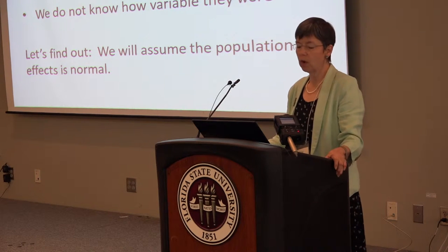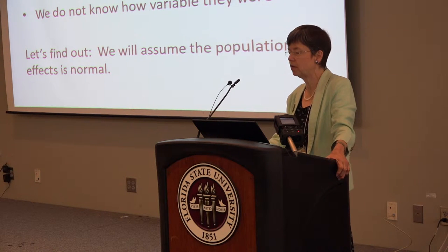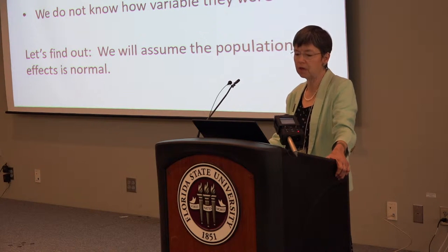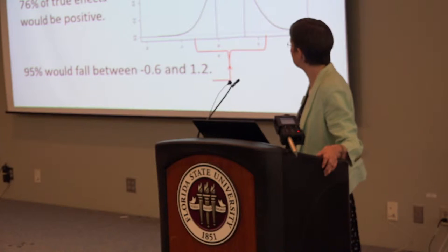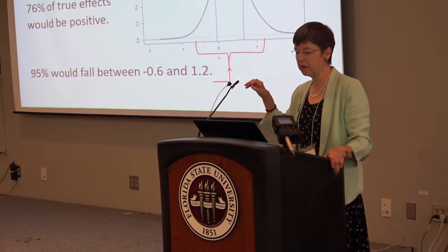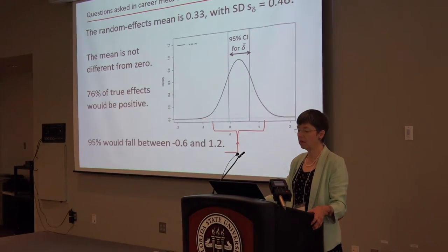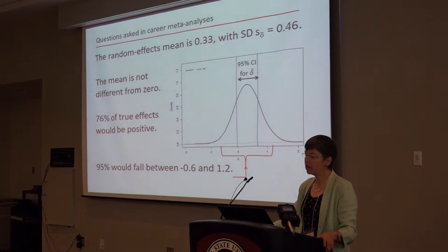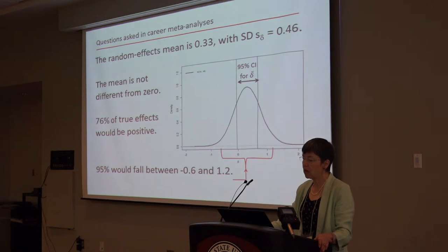What she found was that the mean effect in her analysis, which was based on fixed effects modeling, was 0.21 and the effects were heterogeneous. But we don't know how variable they actually were, so we're going to find out. This is my analysis of her data using a random effects model. The mean goes up a little bit — it's 0.33 — and the standard deviation estimated for the population of effects, this is not the variance of the mean, is 0.46, so almost half a standard deviation.